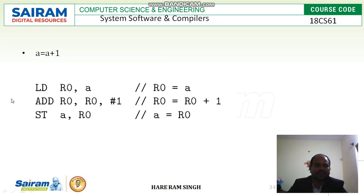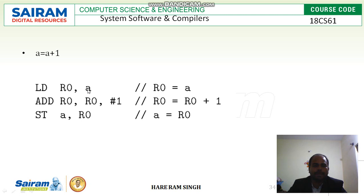Let us look at one more statement: A = A + 1. The target code generator converts this as: load A into r0 — LD r0, A — then add immediate value 1 — ADD r0, r0, #1 — then store back to A — ST A, r0. Here #1 is an immediate value, so A plus 1 is computed in r0 and stored back to A.